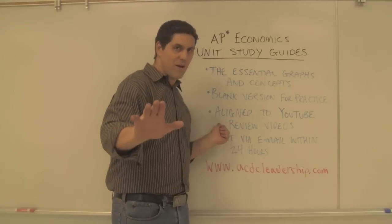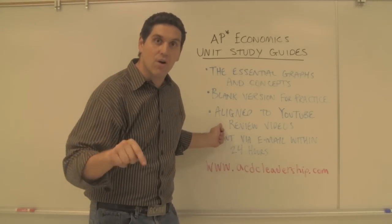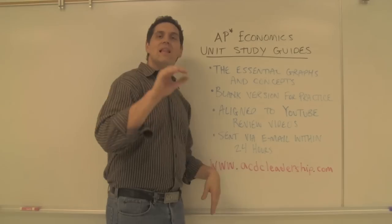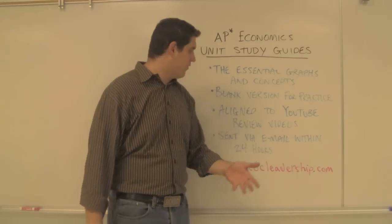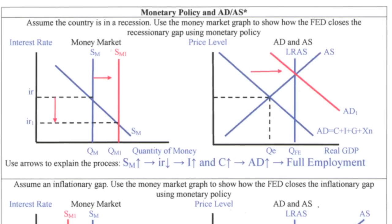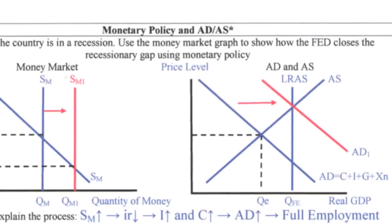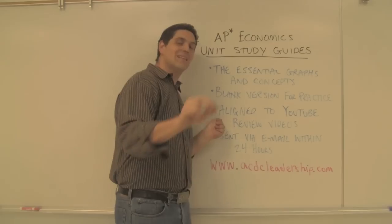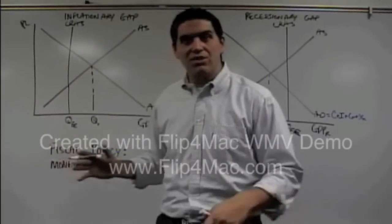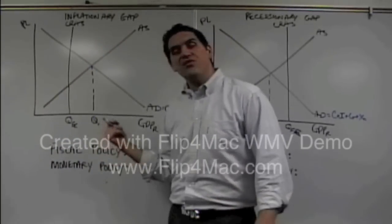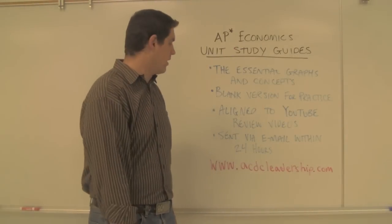They're also — and here's the best part — they're aligned to the YouTube videos right here on YouTube. Let's say you're confused: I don't get the concept, I don't understand this graph, I don't understand that graph. Well, there's a little asterisk in the corner. That asterisk tells you that this content or this graph is aligned to a YouTube video that I have on YouTube. So watch the YouTube video, understand the concept, pass the test, pass the AP test — you rock.